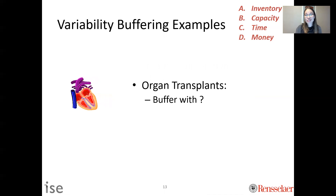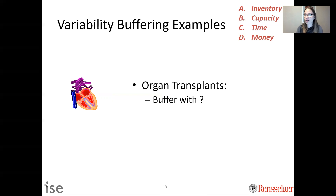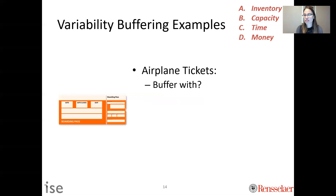What is the appropriate variability buffer for organ transplants? Unfortunately, in the U.S., you have to get on a waiting list because we don't have extra capacity. When you need an organ, you have to wait. They're buffering against variability using time — anytime someone has to wait, time is being used as the buffer.